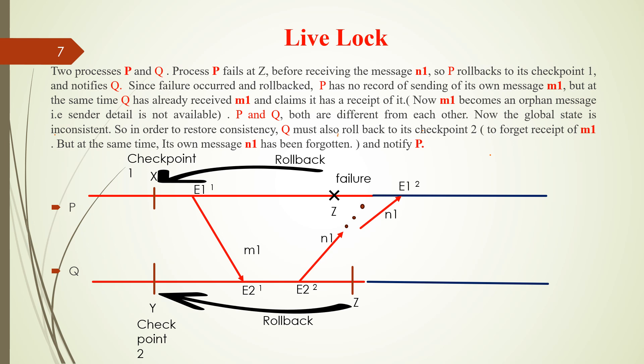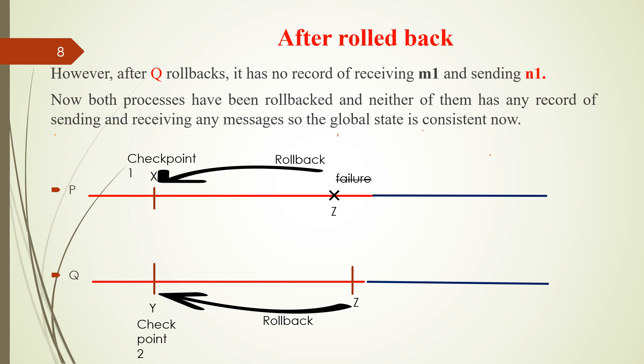Q must rollback to the latest checkpoint. After Q rollbacks, it has no record of receiving M1 and sending N1. Now both processes have been rolled back. Neither has any record of sending, receiving, or any messages. So the global state is consistent now, temporarily.